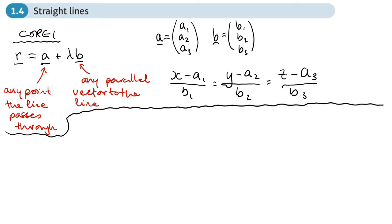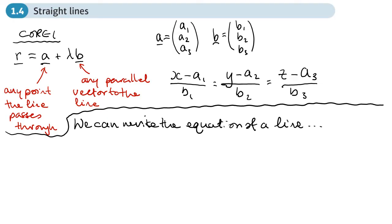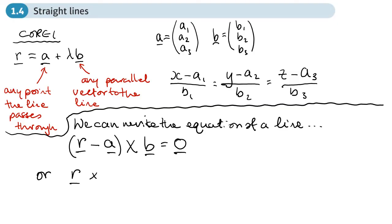So obviously now we've got a new way of writing the equation of a straight line, and that's using the cross product. We can write the equation of a line in two forms: as (r minus a) cross b equals zero (that's a zero vector), or as r cross b equals a cross b. This is the new way to write the equation of a line in three dimensions using the cross product.